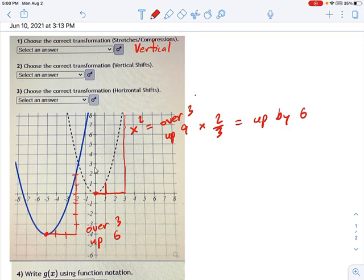So what that means is we have a vertical stretch. I'm sorry. This is less than 1, right? Vertical compression of, and then you take that factor of 2 thirds. Vertical compression of 2 thirds.